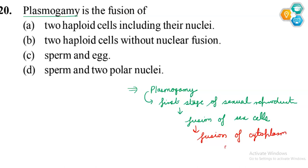Cytoplasm of sex cells, but without nuclear fusion. We use the term karyogamy for nuclear fusion. In plasmogamy, there is only cytoplasm fusion. Fusion in plasmogamy is only cytoplasm fusion of two haploid cells without nuclear fusion.